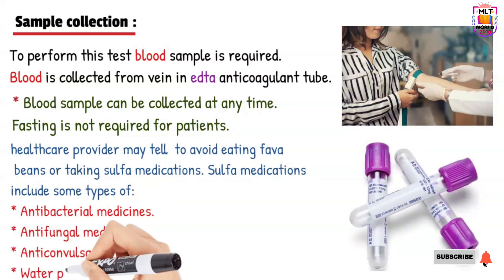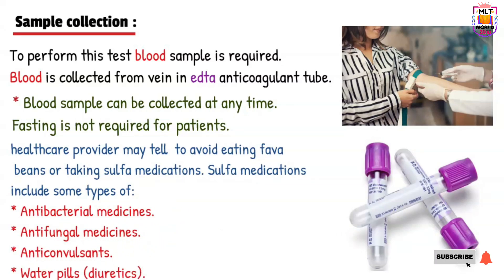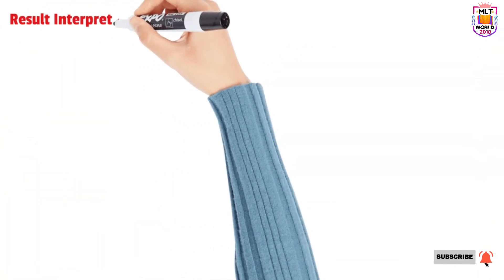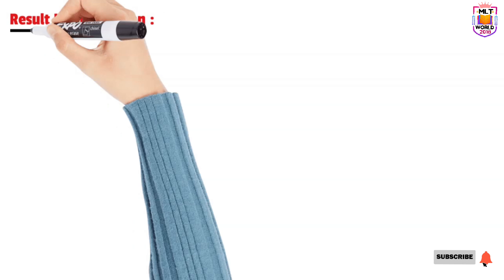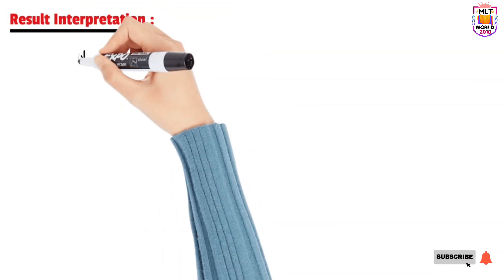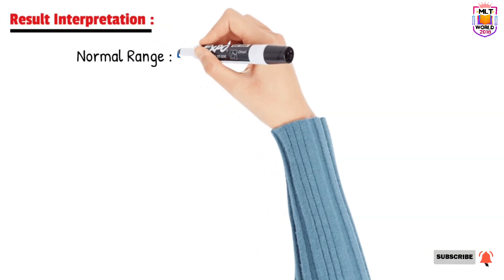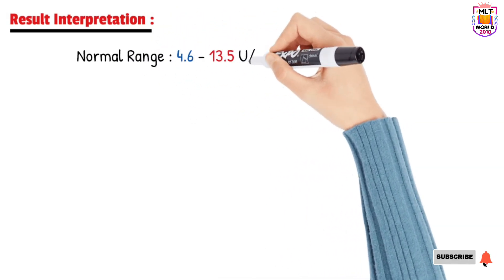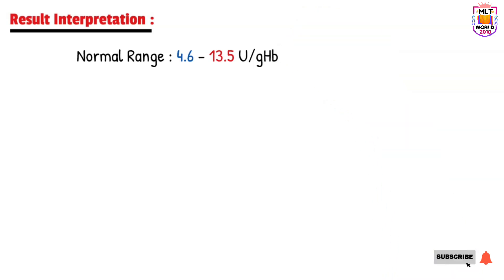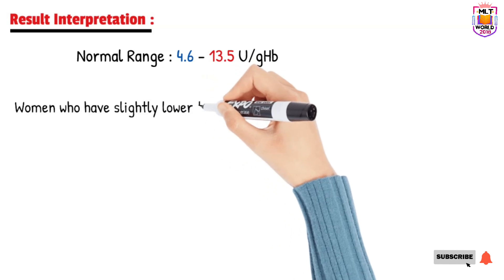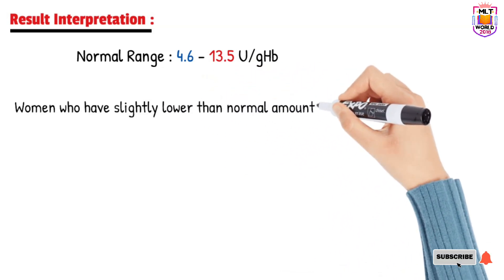It is better to always perform the G6PD quantitative test, as it gives a more accurate result. The normal range is 4.6 to 13.5 U per gHb for a quantitative G6PD result. If the value is less than 4.6, it means G6PD deficiency.